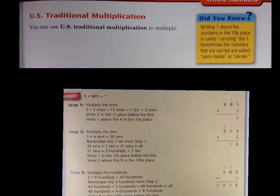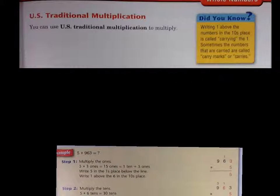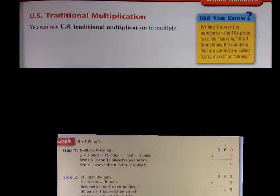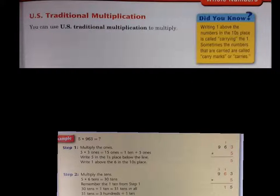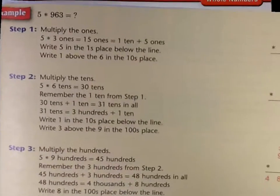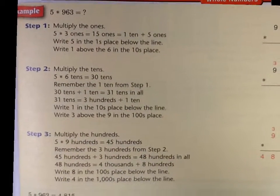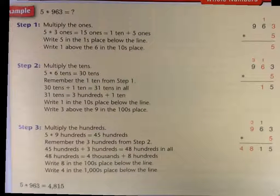Here is the U.S. traditional multiplication. So it says you can use U.S. traditional multiplication to multiply. Let's see what we did here. So if we're multiplying 963 by 5, or 5 times 963, you set it up just like a regular multiplication problem. Bigger number on top, times out front, smaller number equals.